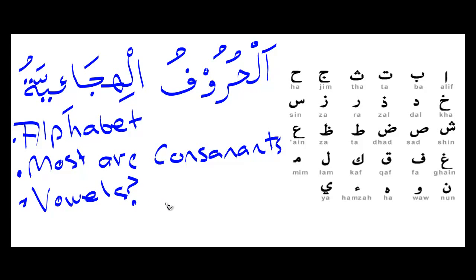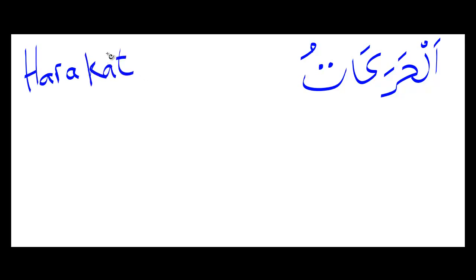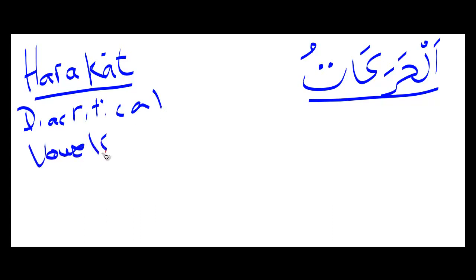The vowels in Arabic are expressed through something called harakat. So we have al-harakat — let me write that in English — al-harakat. That's the main term we're going to be using, although sometimes in academic language they're known as diacritical marks, sometimes as vowels, and sometimes simply as ticks.